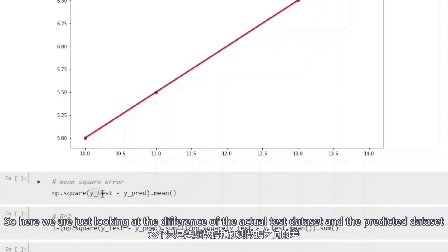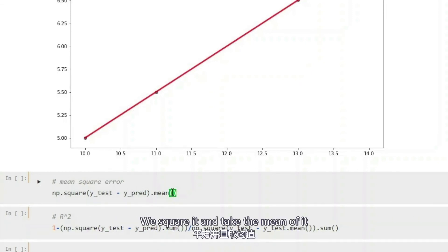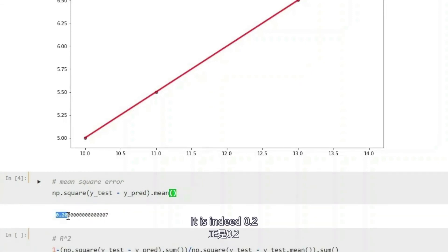So here, we're just looking at the difference of the actual test data set and the predicted data set. We square it and take the mean of it, and it is indeed 0.2.